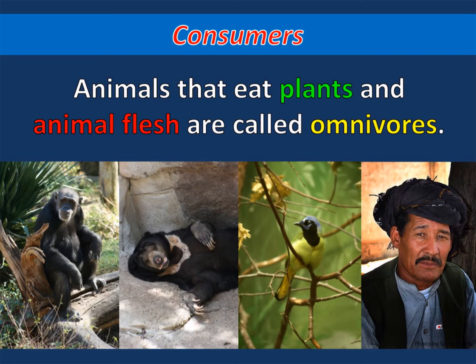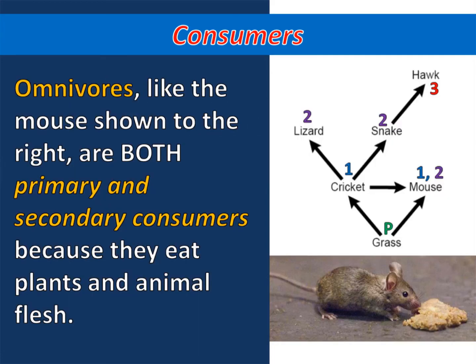Animals that eat plants and animal flesh are called omnivores. Omnivores, like the mouse shown to the right, are both primary and secondary consumers because they eat plants and animal flesh.